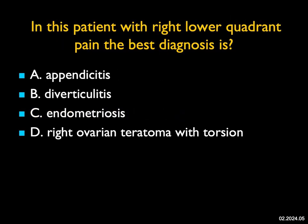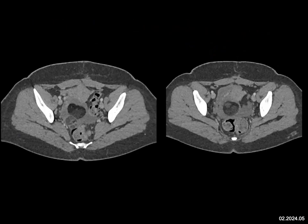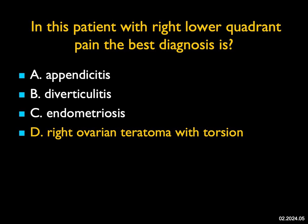In this patient with right lower quadrant pain, what you see here is a mass in the pelvis and there's free fluid representing blood. The mass is of partly fat density, which makes you think about a teratoma or a dermoid. Endometriosis can present with solid masses, but not fat. This is not a case of diverticulitis or appendicitis. So this is a patient with right ovarian teratoma with torsion. Sometimes you can see the torsed ovary and the lead point to it; sometimes you can't, especially when there's lots of blood present.